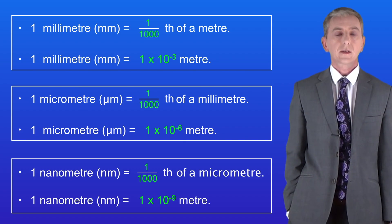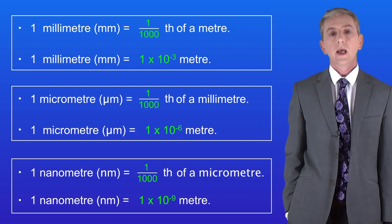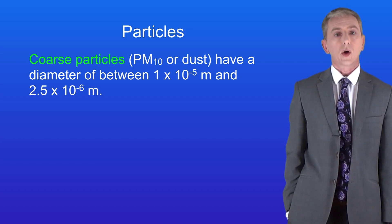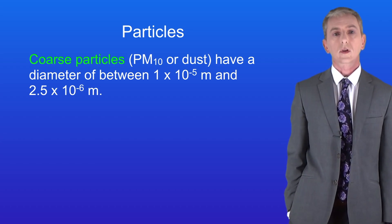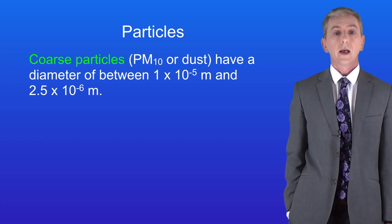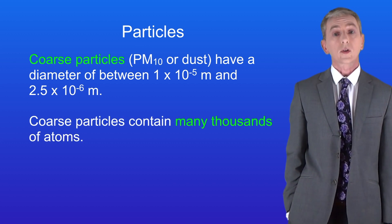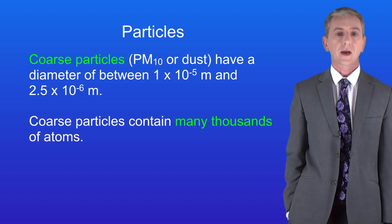So in this video we're looking at different sizes of particles. Let's start by looking at coarse particles which are also called PM10s or dust. Coarse particles have a diameter between one times ten to the power of minus five meters and 2.5 times ten to the power of minus six meters. Coarse particles contain many thousands of atoms.